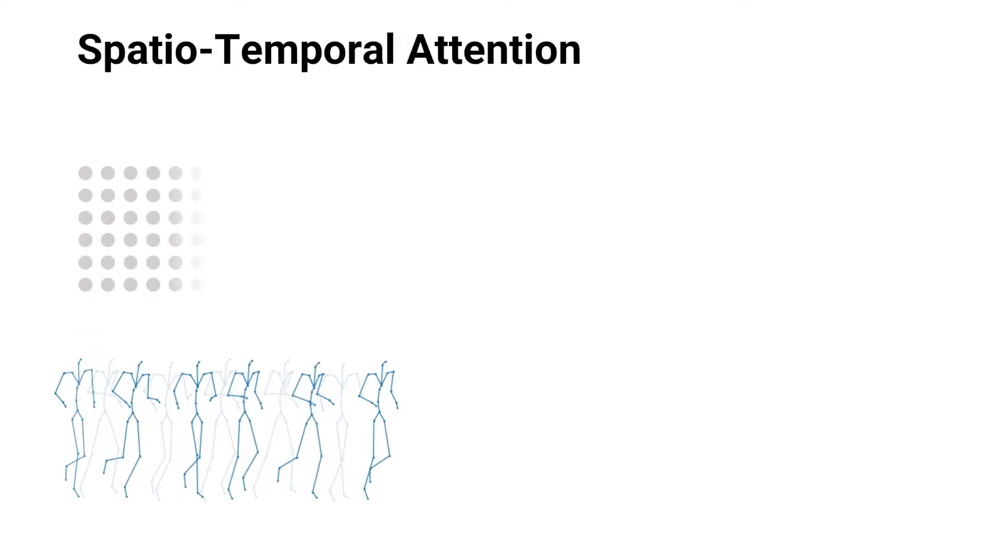Given a motion sequence, we first project every joint of the skeleton onto a higher dimensional embedding space. Our decoupled attention mechanism then refines the joint embeddings by leveraging relevant temporal and spatial dependencies.